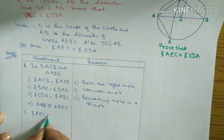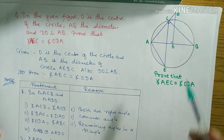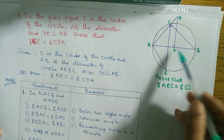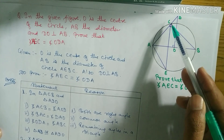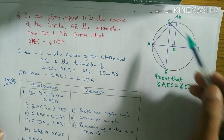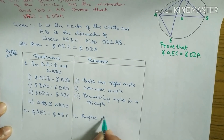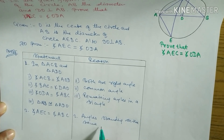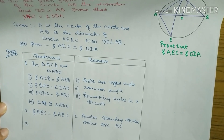Statement five: angle AEC equals angle ABC. Looking at the diagram, angle AEC and angle ABC are equal because they are inscribed angles standing on the same arc AC. The reason is: angles standing on the same arc AC are equal.